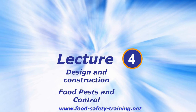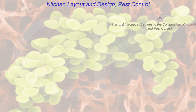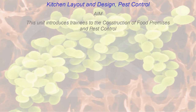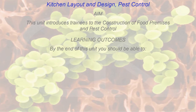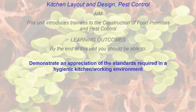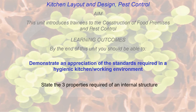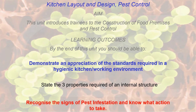Here's lecture four, just two more lectures to go. This is all about design and construction of food premises and kitchens, and food pests and control. The aim of this unit is to introduce you to the construction of food premises and kitchens and pest control. By the end of this unit you will be able to demonstrate an appreciation of the standards required in a hygienic kitchen working environment, state the three properties required of an internal structure, and recognize the signs of pest infestation and know what action to take.